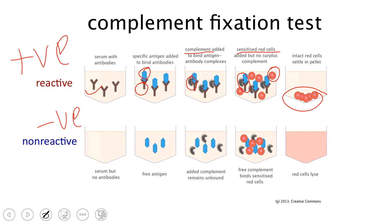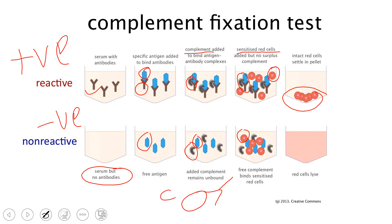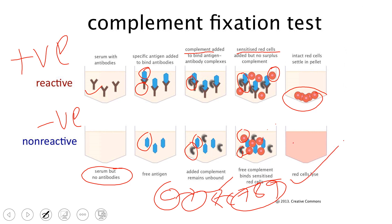Since no complement is available, the RBCs won't be lysed and will settle as a pellet at the bottom of the test tube — no color is formed, indicating a positive result. In the negative case, the serum lacks antibody, so antigen remains free. Complement proteins cannot bind the free antigen, so when sensitized RBCs are added, free complement binds them. The C789 membrane attack complex lyses the RBCs, producing a red color visible by colorimeter.